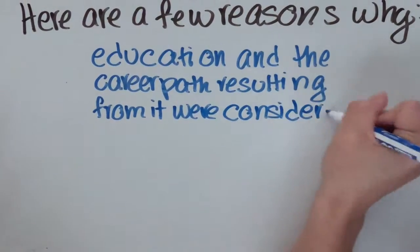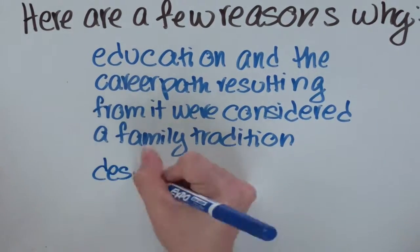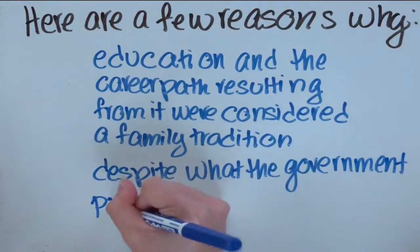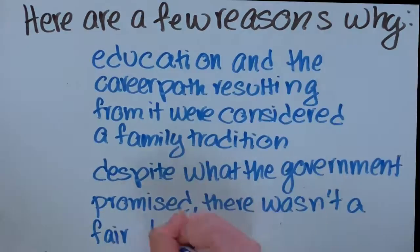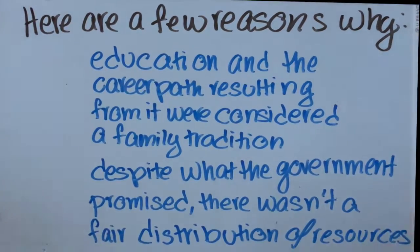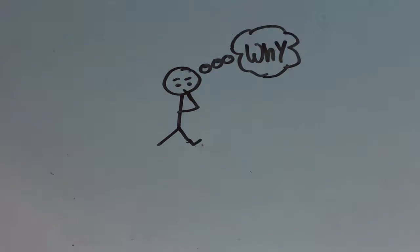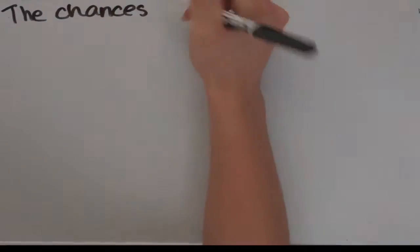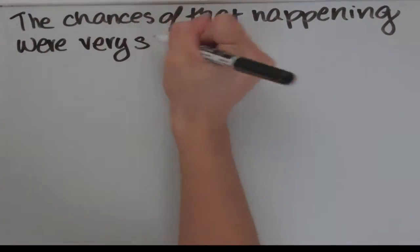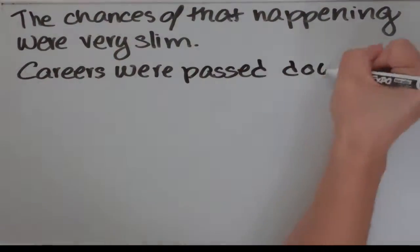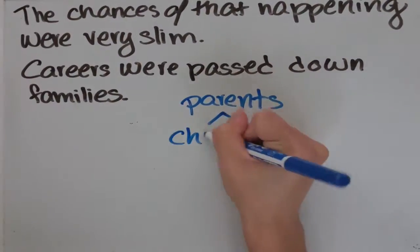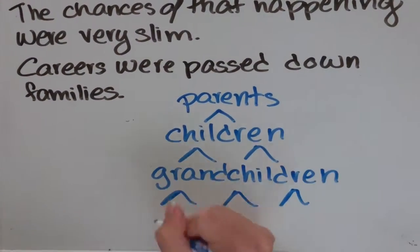Here are a few reasons why. One, education and career paths were considered family traditions. Two, despite what the government promised, there wasn't a fair distribution of resources. But what caused this? One reason this may have occurred is that people in the USSR believed education and careers were a familial tradition, so educators were often bribed to influence these traditions.